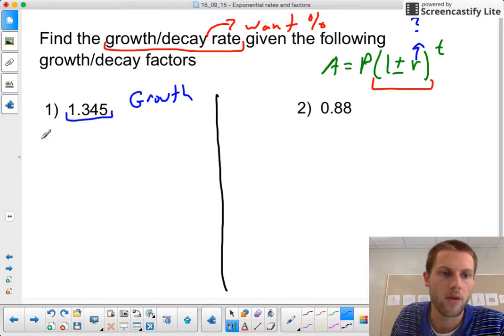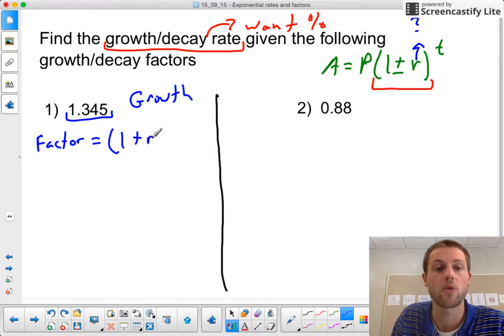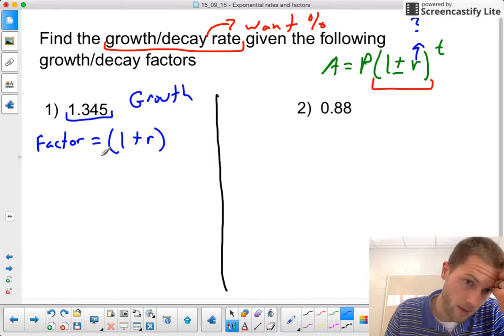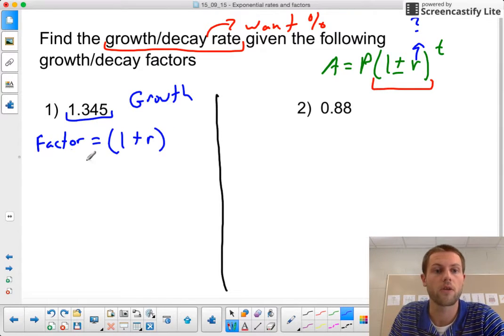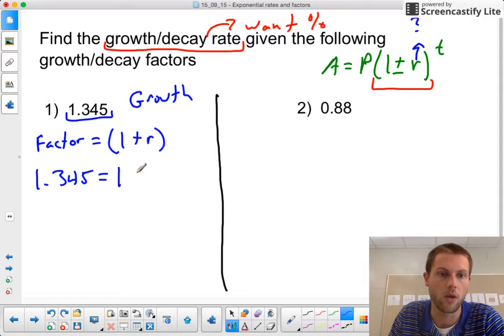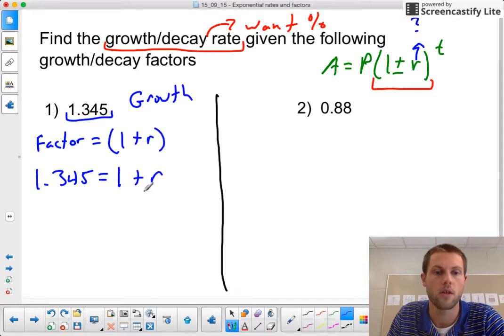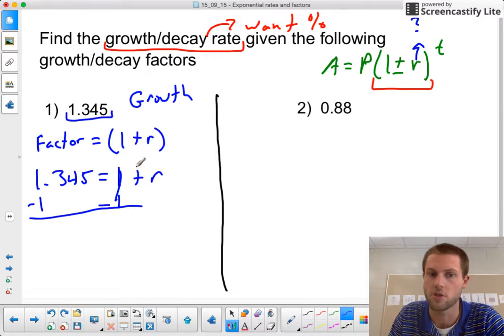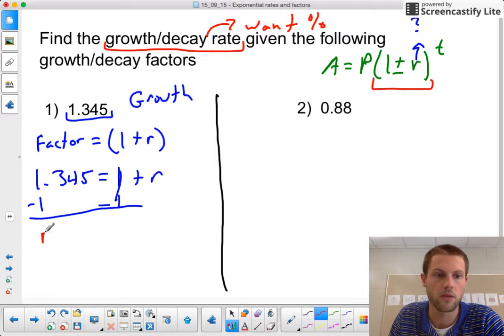Growth is the first thing we want to identify. If we're dealing with growth, that means our growth factor is going to equal 1 plus our rate. We know that our whole factor is 1.345, and if that's equal to 1 plus our rate, then all we're doing is subtracting 1 from both sides of these equations to find out what our r is. It's just a simple algebra problem here.